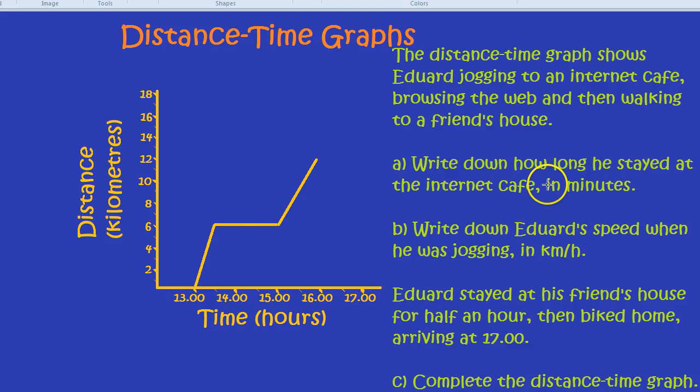But the question was, how long did he stay in minutes? What's an hour and a half in minutes? An hour is 60 minutes. Half an hour is 30 minutes. So, an hour and a half is 60 plus 30 or 90 minutes. So, the answer to the first question is 90 minutes.